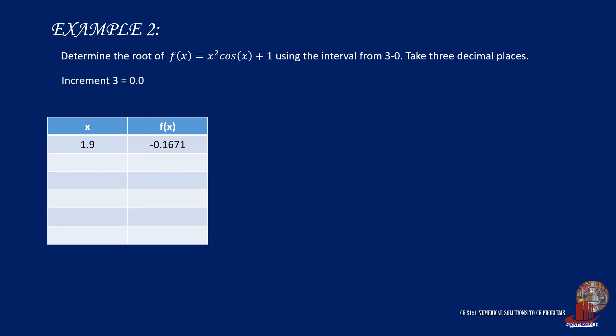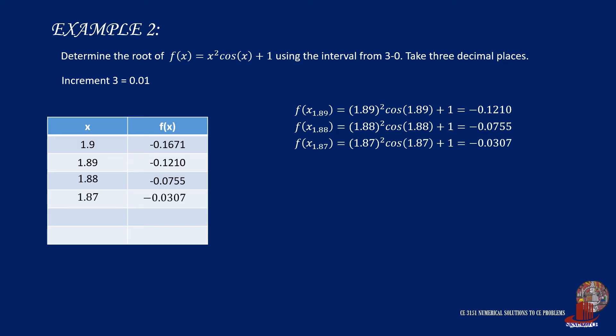Take the third increment as 0.01, whereby, using this interval from 1.9, we would use x = 1.89, and it gives the value of f(x) as -0.1210. The next interval will be with 1.88, giving f(x) as -0.0755. Moving further with 1.87, the value of f(x) would be taken as -0.0307.